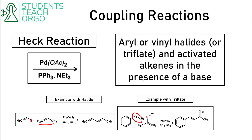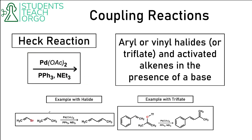The reaction also needs to be in the presence of a base. The reagents you might see that denote a Heck reaction include the palladium catalyst, and triethylamine as the base. The shortcut is that we lose the bromine and make a bond from where the bromine was to the alkene, and you can see that coupling comes together to give us the coupled product.